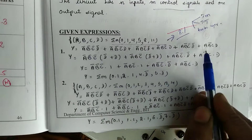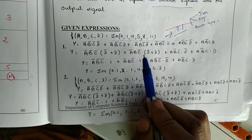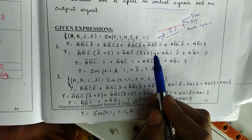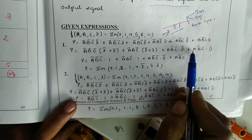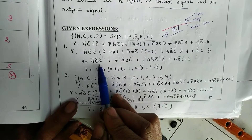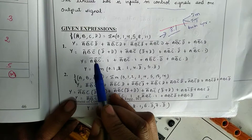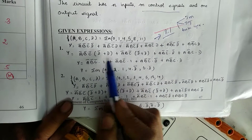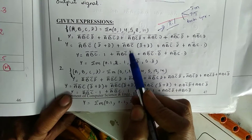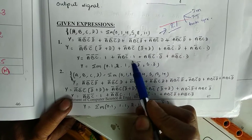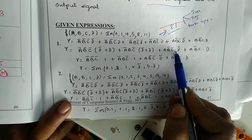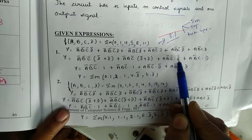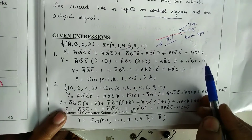From this equation, I am fixing d as a variable and expressing the output in terms of d. After taking the common factor, I got this equation: y = a-bar b-bar c-bar · 1 (because d + d-bar = 1), then a-bar b c-bar · 1 (no common factor, kept as is), plus a term with d-bar and a term with d.